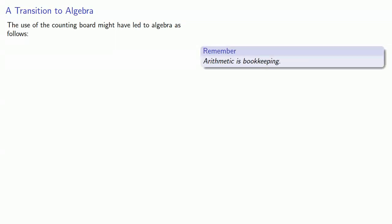So this is a little bit of speculation, but the use of the counting board might have led to algebra as follows. So remember, arithmetic is bookkeeping. And so we could use the counting board for arithmetic. The columns of the counting board might represent different arithmetic units: ones, tens, hundreds, and so on.